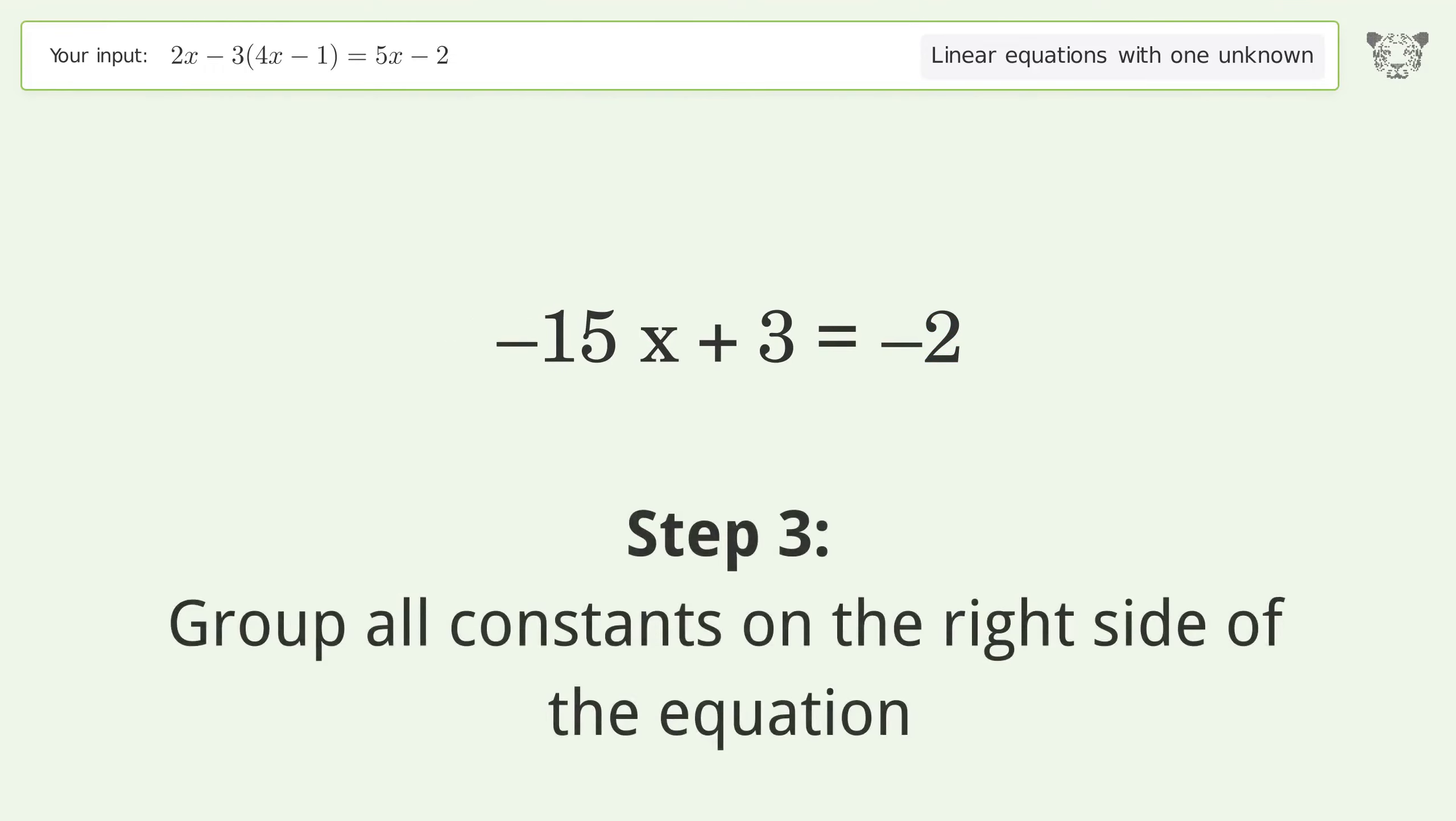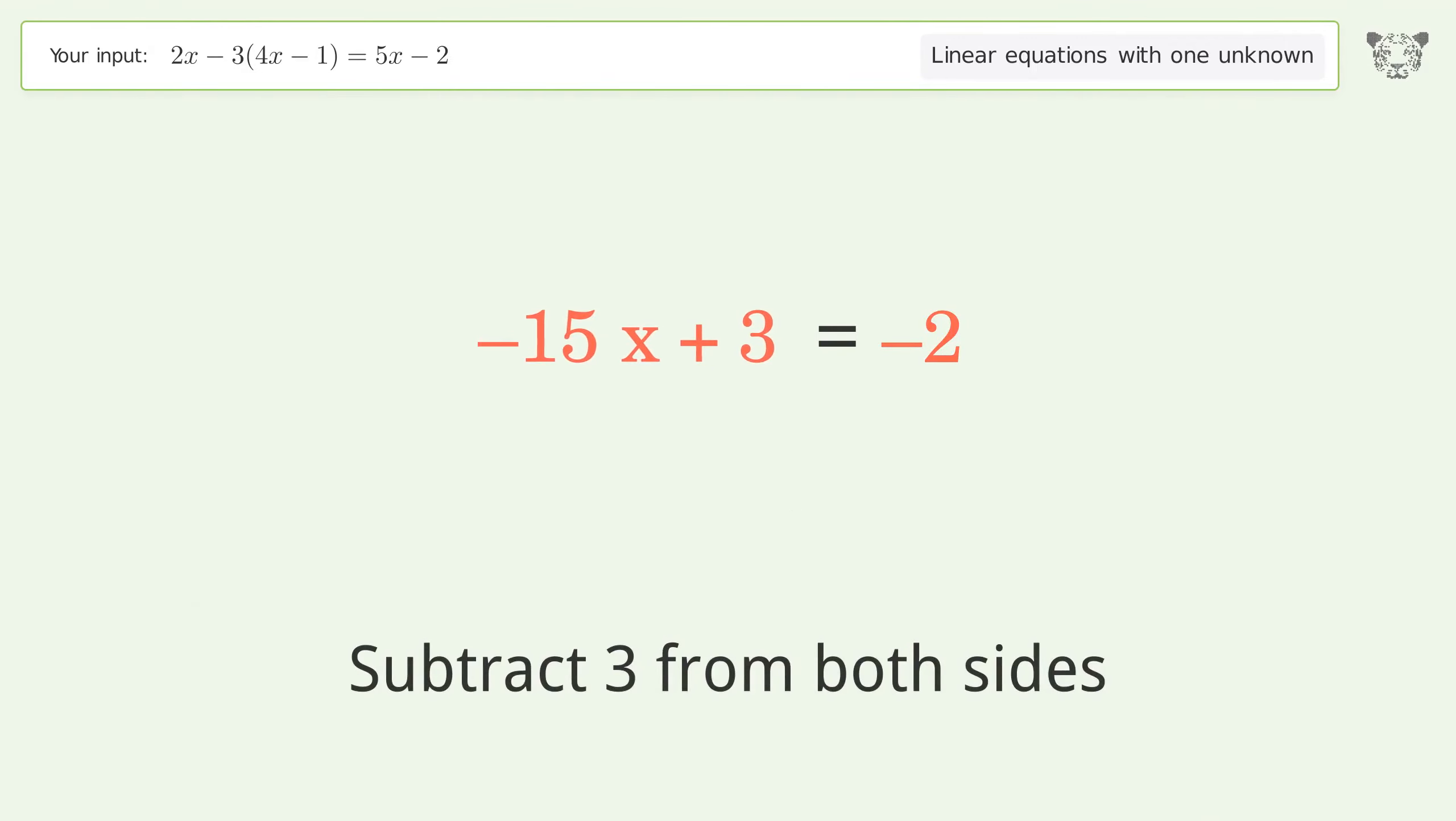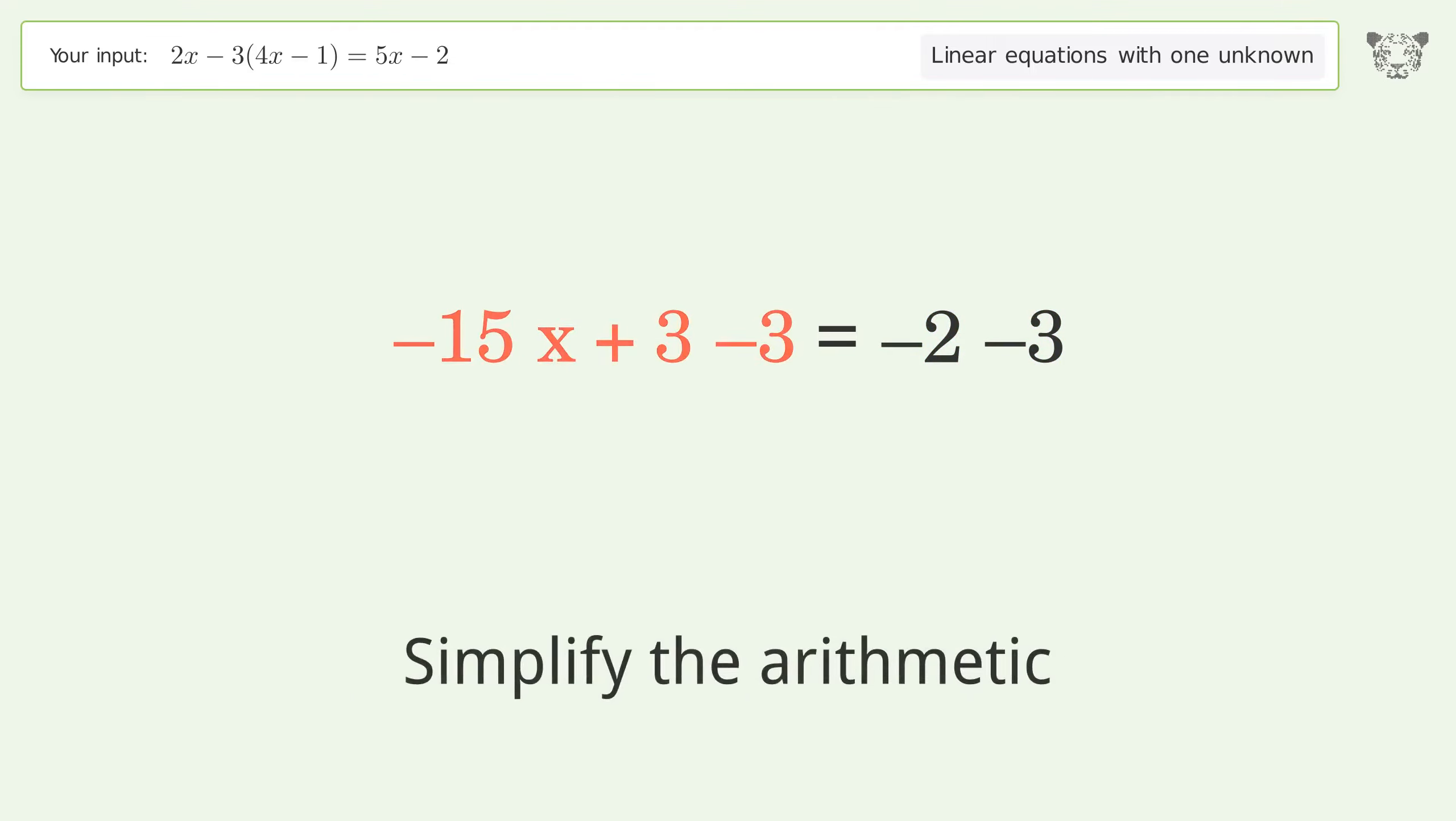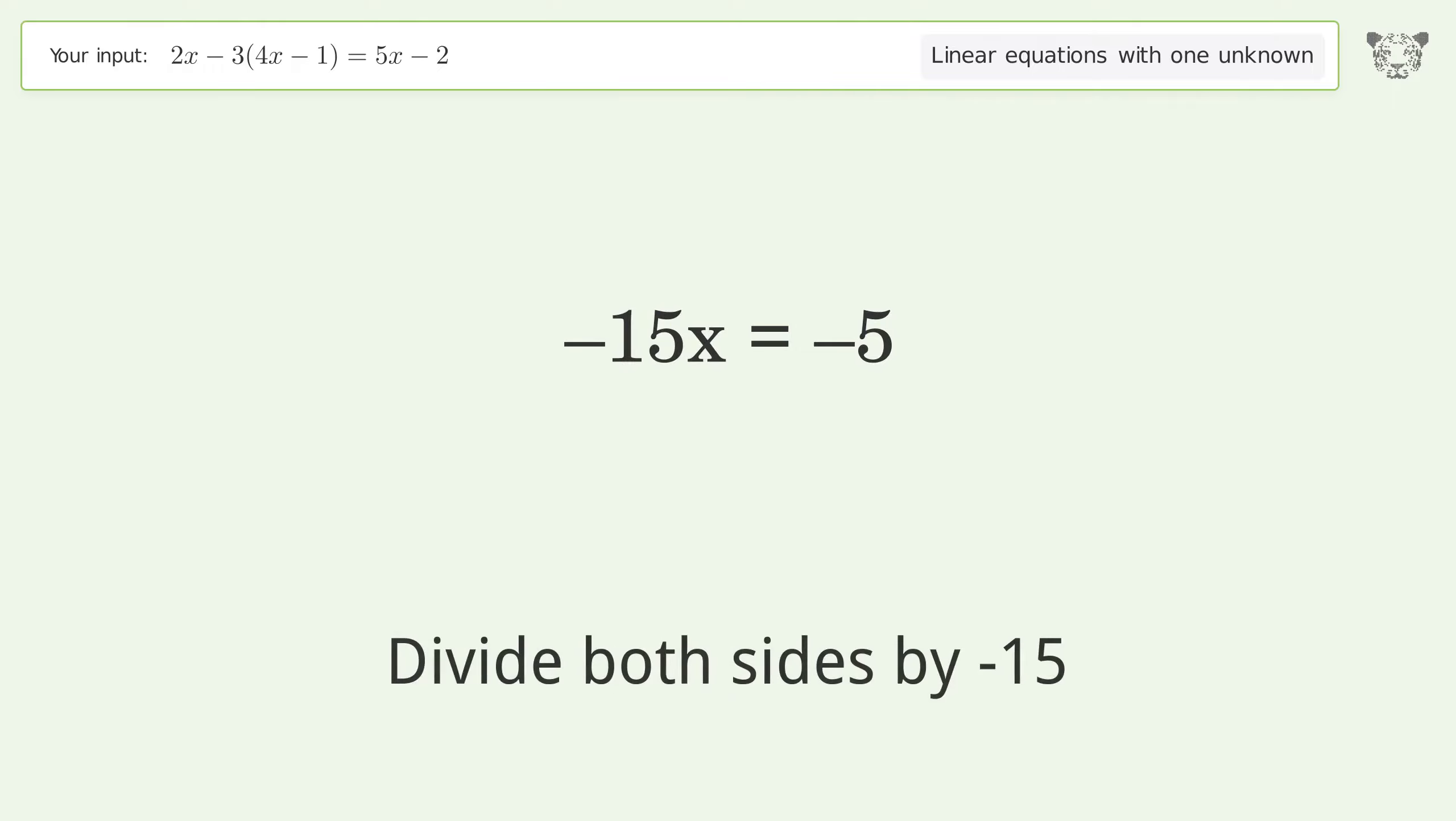Group all constants on the right side of the equation by subtracting 3 from both sides. Simplify the arithmetic. Isolate the x by dividing both sides by negative 15.